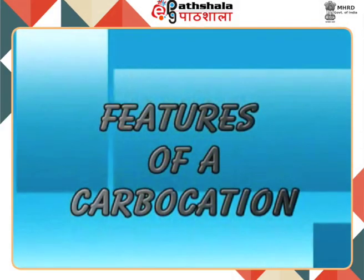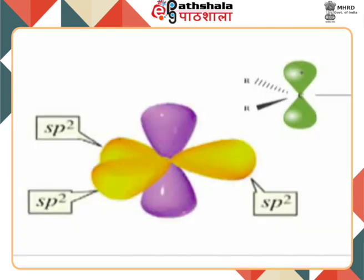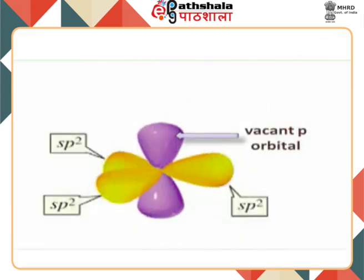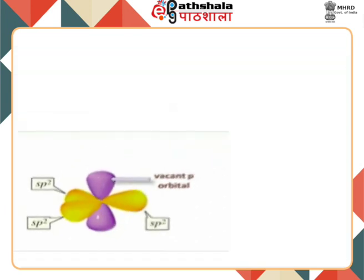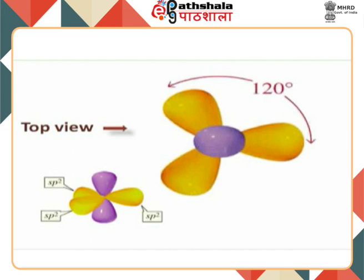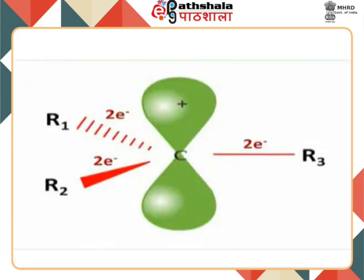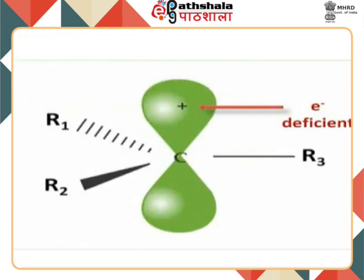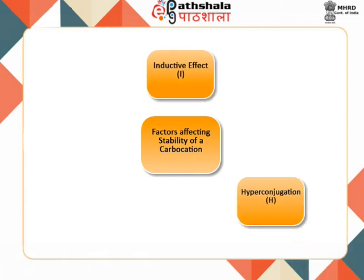Let us go through the various features of a carbocation. The carbon bearing the positive charge of a carbocation is sp2 hybridized and has a vacant unhybridized p orbital. It has a planar structure with bond angles of 120 degrees. The positively charged carbon is trivalent and has a sextet of electrons, making it electron deficient. Stability of a carbocation is governed by factors such as inductive effect, hyperconjugation, or resonance effect.